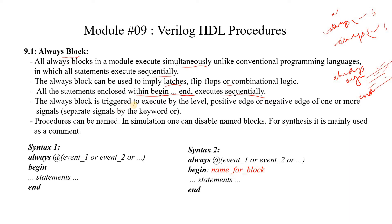The always block can be triggered to execute by the level, positive edge, or negative edge of one or more signals present in its sensitivity list. Basically, the always block can be triggered by any change in the signals present in the sensitivity list. The sensitivity list is whatever we mention after the at-sign keyword. The signals — event 1 and event 2 — represent a change in one of the signals, and that change can be a level-sensitive change or an edge-sensitive change.